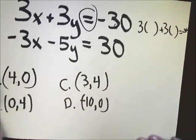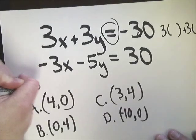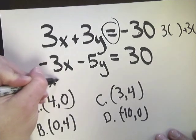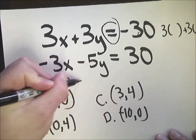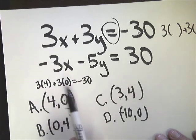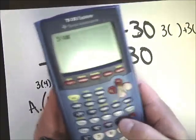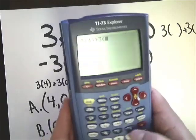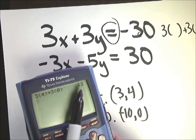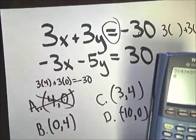For A is 4, 0. So on this one, I would do 3 times 4 plus 3 times 0 equals negative 30. I can do this because x is 4 and y is 0. If this side equals this side, I'm done. So I'm going to check. It gives you 12. It doesn't give you negative 30. So this cannot be the answer as long as you plug it in correctly.